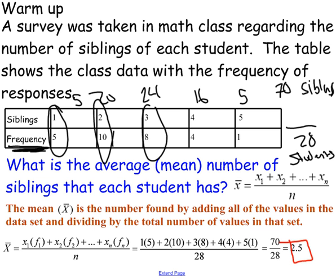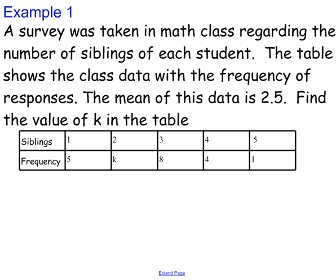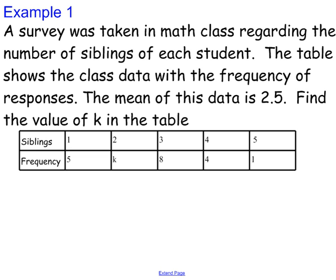All right, now, recall, our aim for this video is how do you find missing data when provided with the mean. So we're going to look at that right now. So here's our example. It says a survey was taken in math class regarding the number of siblings of each student. The table shows the class data with the frequency of responses. The mean of this data is 2.5, so that means that x bar is 2.5. Find the value of k in the table. Okay, so we want to figure out what k is.